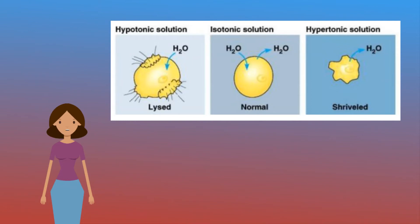This is why cells have to store solutes like glucose as non-dissolvable glycogen, because if there was a lot of dissolved glucose in the cell, the cells would burst.